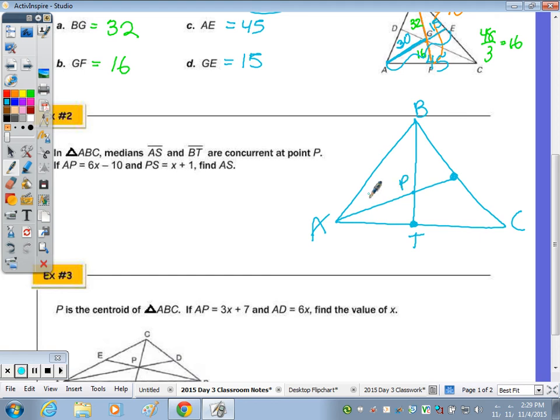It says A to P is 6X minus 10, and P to S for median AS is X plus 1. Algebraically, how would we set up an equation to find X? So we know that two times the smaller segment, so two times this, gives us the larger segment of the median. So two times X plus 1 equals 6X minus 10. We end up with 2X plus 2. Subtract 2X, you get 4X. Add the 10, you get 12. Divide by 4, X is 3.